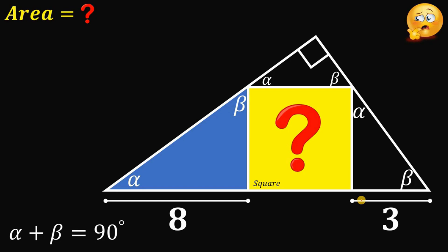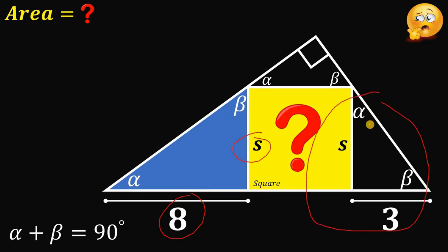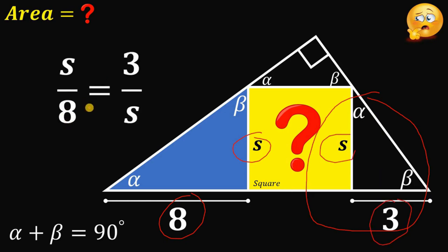Now let's use the concept of ratio and proportion. Let the side of the square be called s, so all sides of the square equal s. In these similar right triangles, the ratio of the side opposite alpha to the side opposite beta must be equal to 3 over s, so we can say s over 8 must equal 3 over s, because these two right triangles are similar to each other.